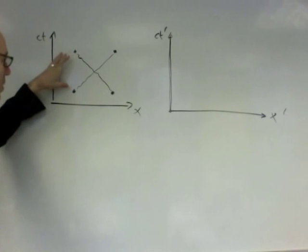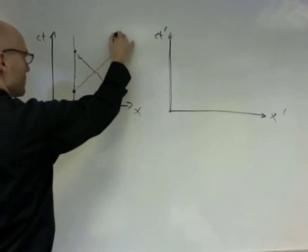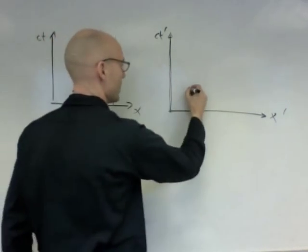So, these two events which were co-spatial in this frame, in fact, why don't I just draw a world line for these events, a world line for these events, these two events which are co-spatial will no longer be co-spatial.